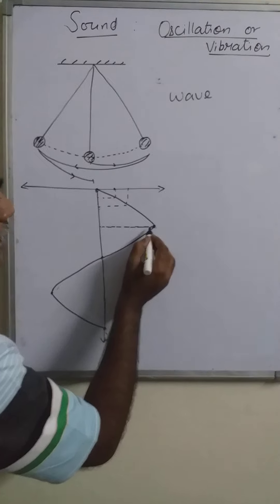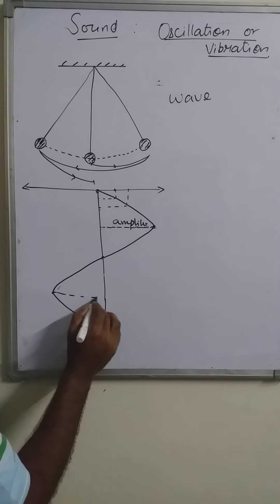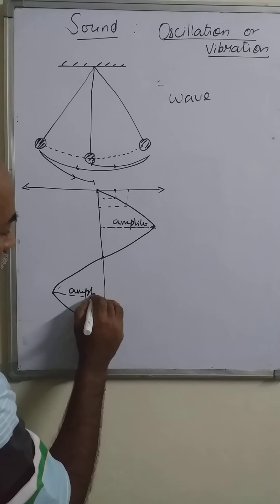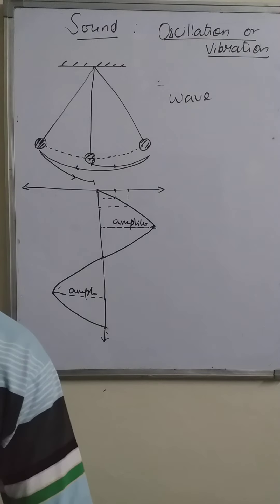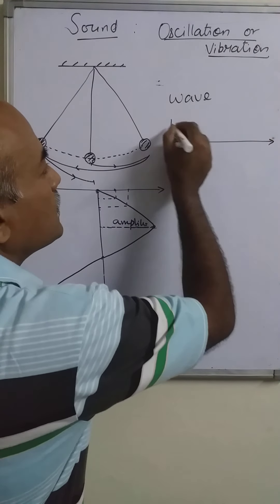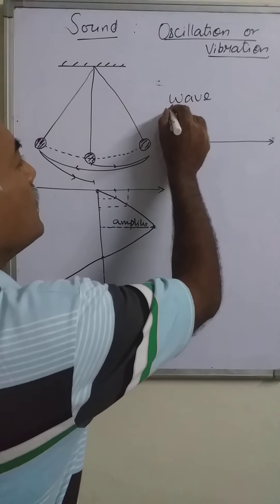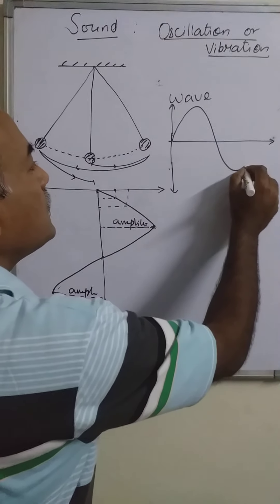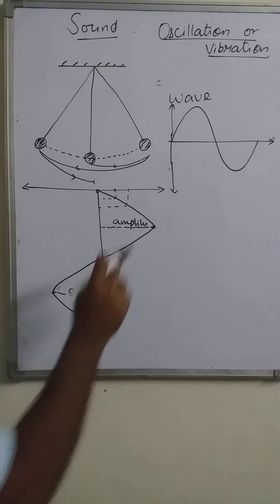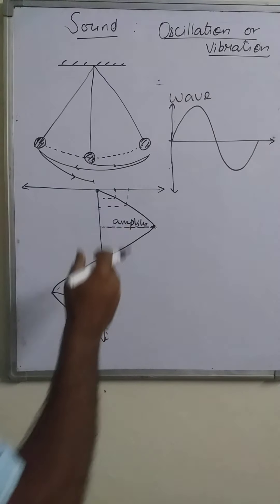This represents the maximum displacement of the particle from the mean position, so this is the amplitude. On the other side, amplitude can also be measured and both are equal. The actual graph is plotted on the X axis and Y axis in this way. This wave pattern represents the oscillation of the particle, and this is called one wave — meaning when the particle has completed one oscillation, it equals one wave.